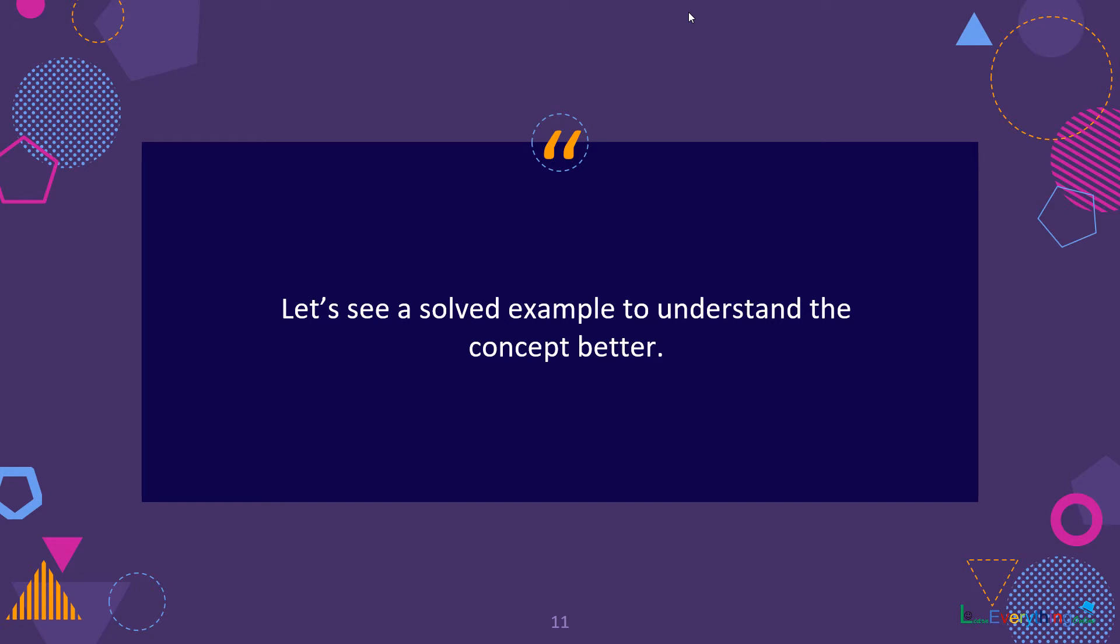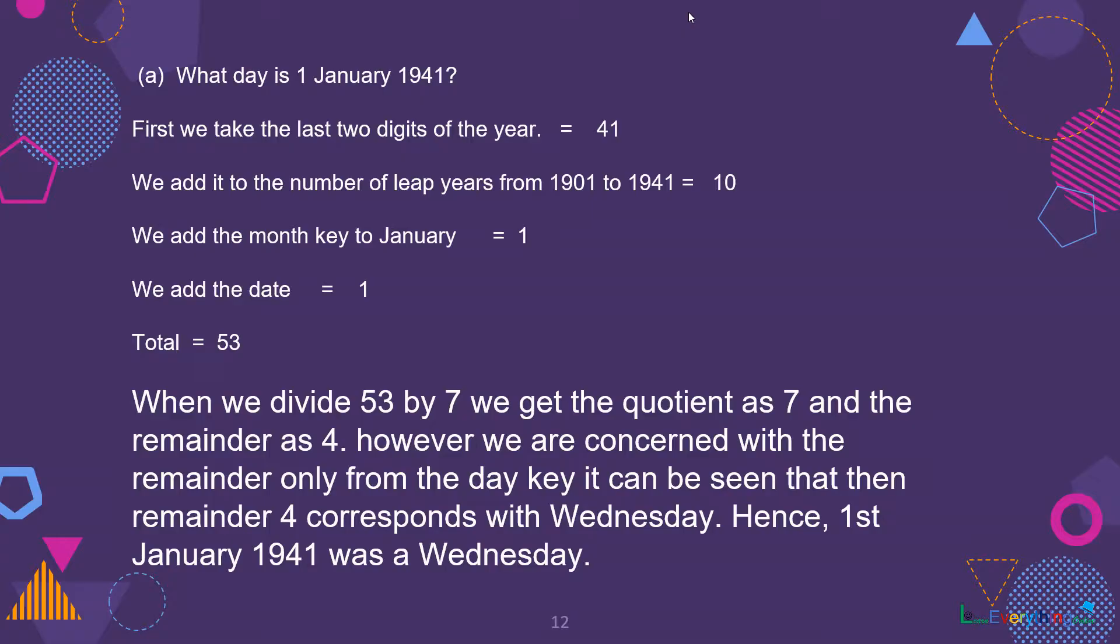What day is 1 January 1941? Let's see with the example. As per the first step, we take the last two digits, so the last two digits in the year 1941 were 41. We add it to the number of leap years from 1901 to 1941, so the number of leap years between these two years were 10.